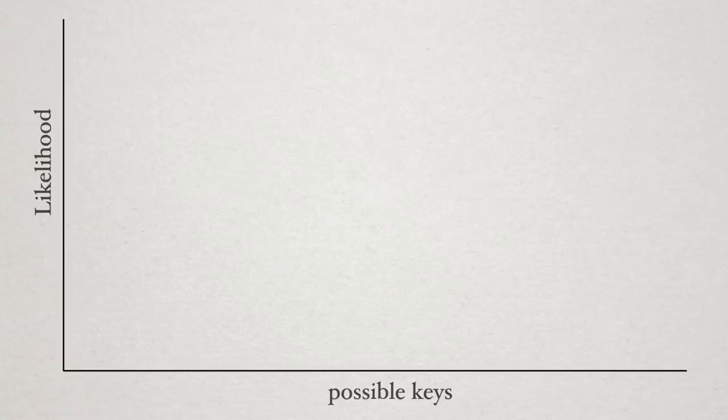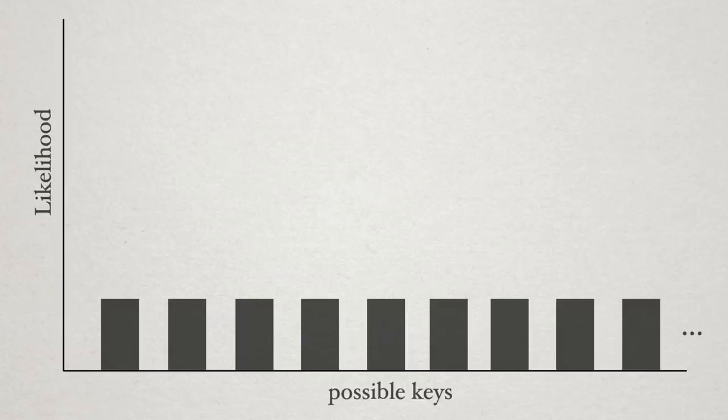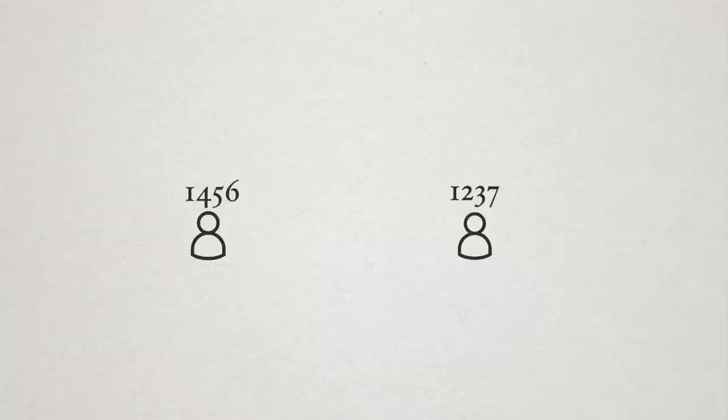Recall that the definition of perfect secrecy from an information theory perspective requires that every possible key look equally likely. This means that someone with one share is no more likely to guess the key than someone who doesn't have a share. In order to prevent the information leak, we need to introduce some randomness.